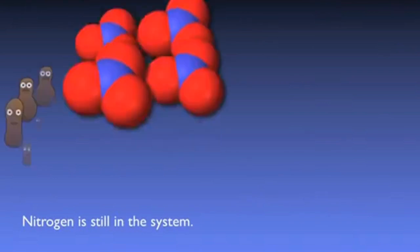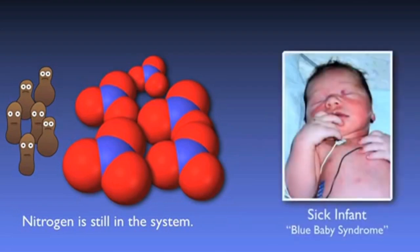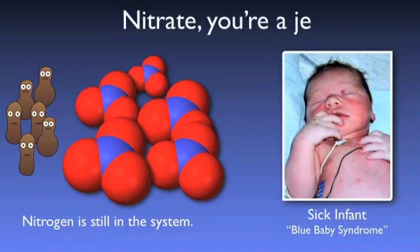After nitrification, the nitrogen is still in the system, mostly as part of the bugs and in the form of nitrate. Though not as toxic as ammonia, nitrates can still contribute to eutrophication, and if released into a source supplying drinking water, can endanger human populations — specifically infants — causing what is known as blue baby syndrome by interfering with blood oxygenation.